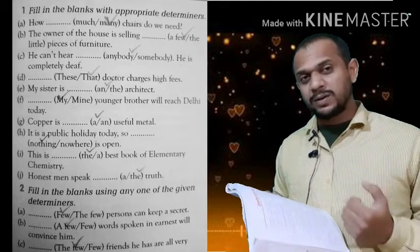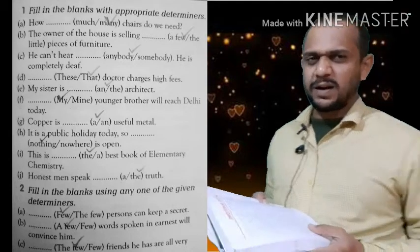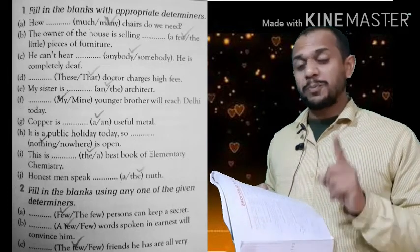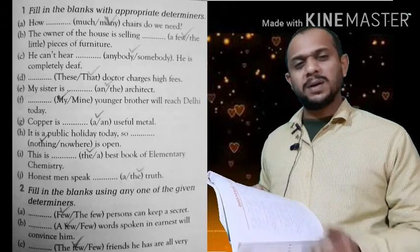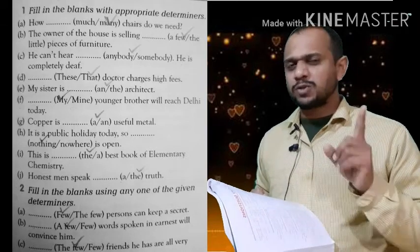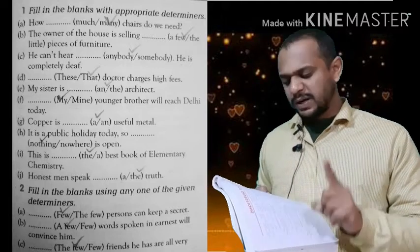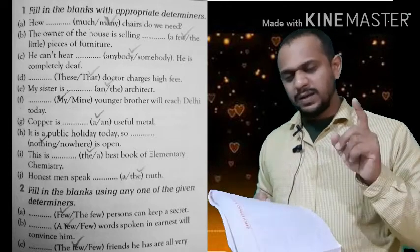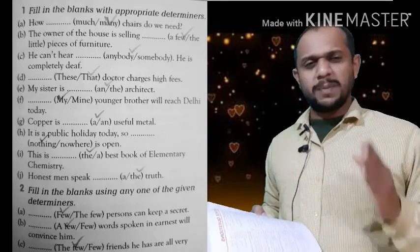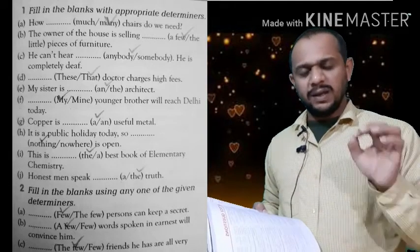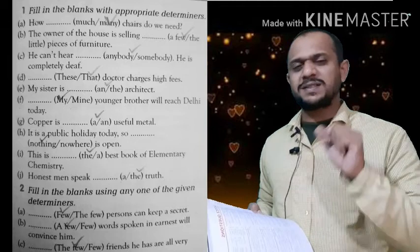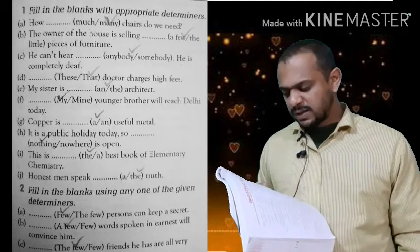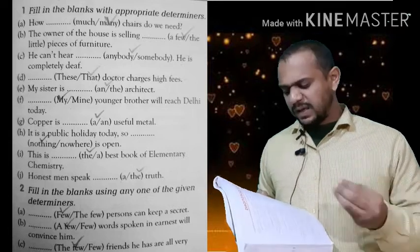Exercise: 'There is dash best book of elementary chemistry' — the or a? Before a superlative degree like 'best,' we always keep the definite article 'the.' Remember: the three degrees are positive, comparative, and superlative. Before the superlative degree, we keep definite article 'the.' So the answer is: 'the best book.'